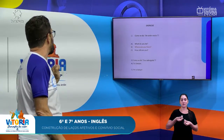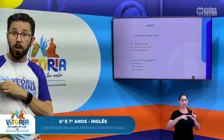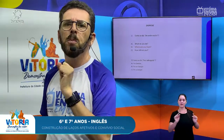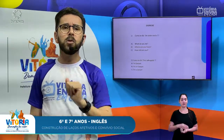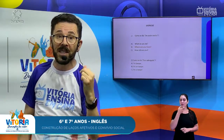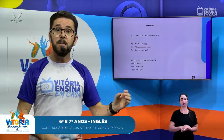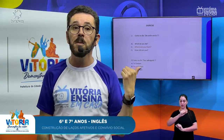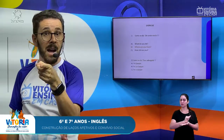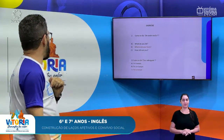Como se diz "sou advogado"? Letra A: "I'm lawyer" — em português tudo bem, mas na língua inglesa é necessário que antes haja um artigo. Letra A está fora de cogitação. Letra B: "I am an lawyer" — também não está correto, porque "lawyer" começa por consoante, então seria "a" e não "an". Letra C: "I am a lawyer" — eu sou um advogado. A alternativa certa é a alternativa C.